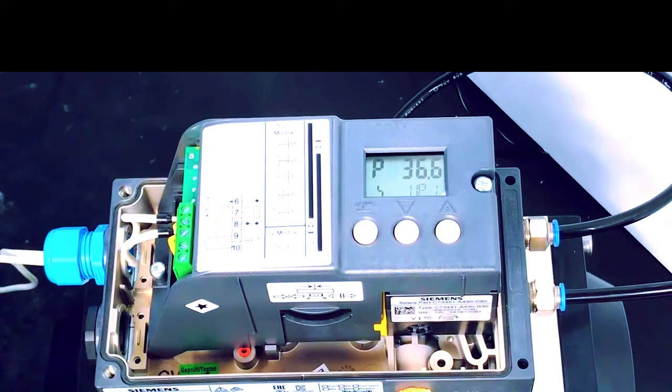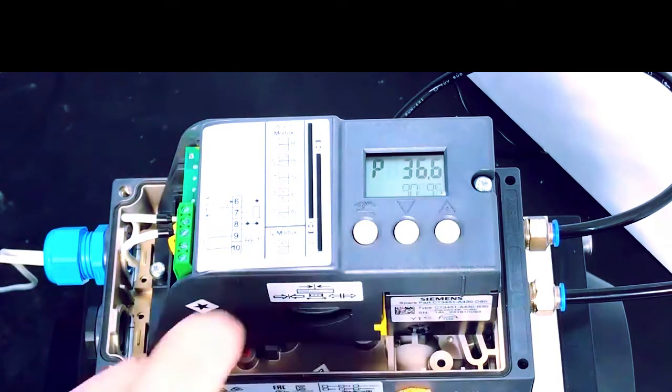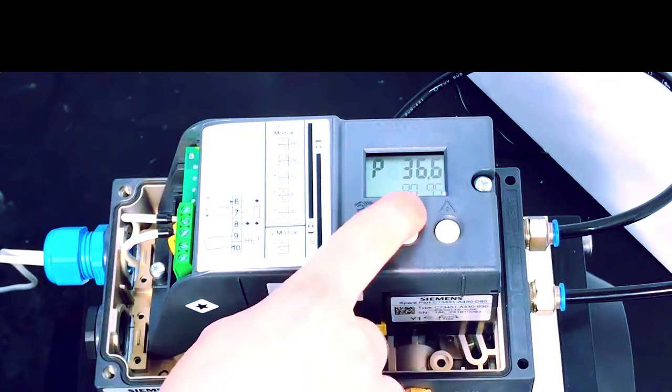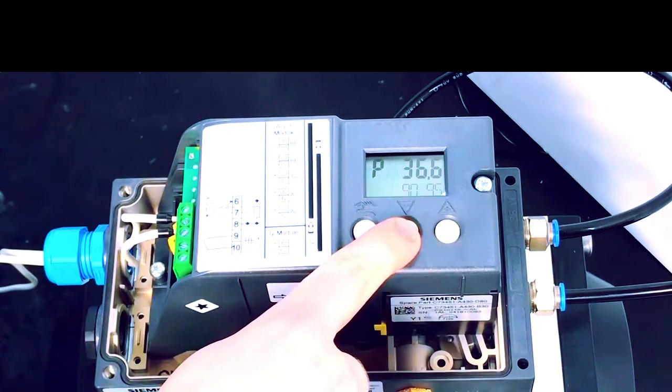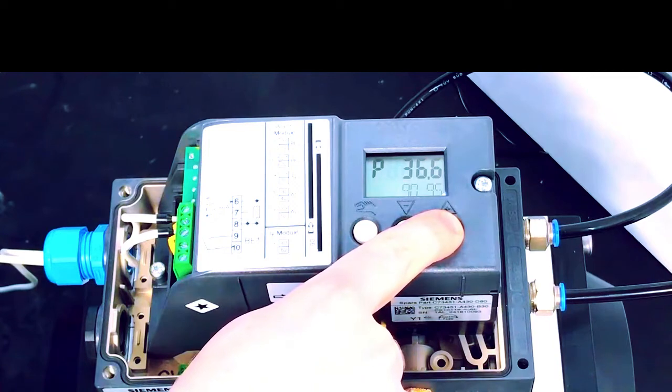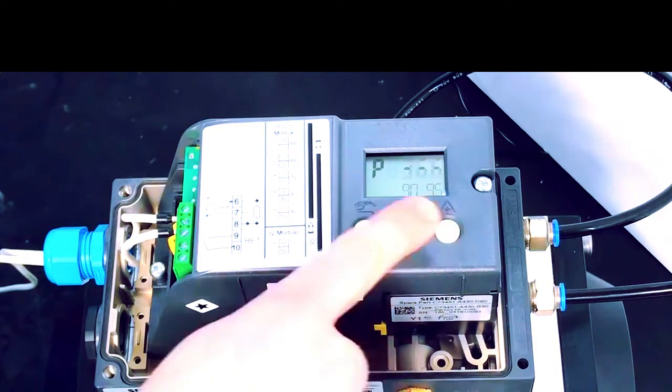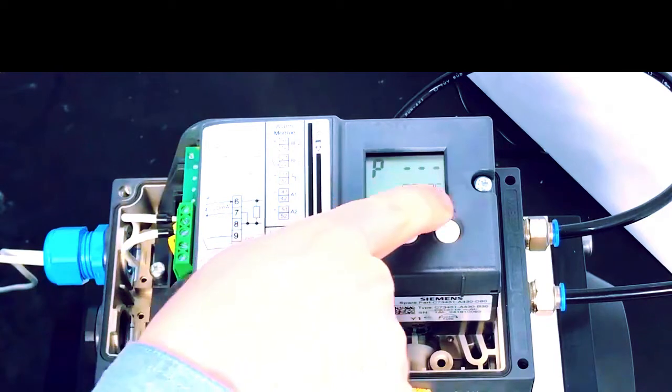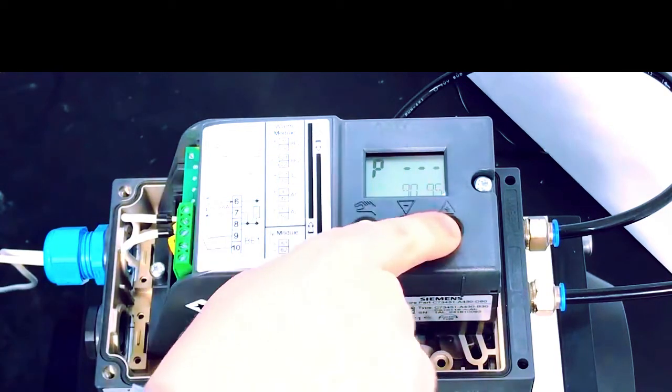Another common issue you might come across is during run three this error might present itself. Press the plus button and what we want to do is press the plus and minus buttons to adjust the position of the actuator manually until the readout at the top is between what's listed in the second line.